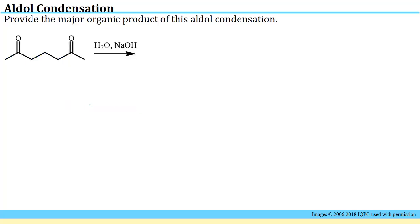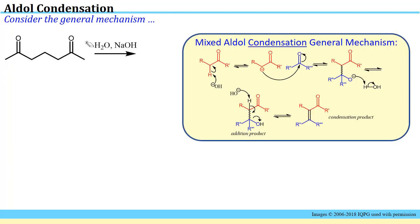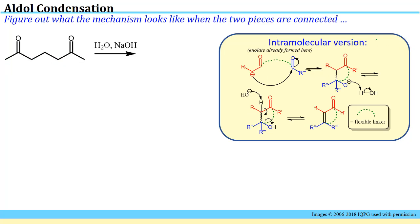Aldol condensation can also occur intramolecularly. Instead of two separate carbonyl species reacting to form one molecule, you can take two carbonyl functional groups attached by some type of linker and do an aldol condensation between the two. You still want to identify the alpha position that will act as a nucleophile. In this case, we have alpha carbons at several positions. I would color-code the nucleophilic piece in red, the piece that gets attacked in blue, with a dotted line representing the linker. In the product, you'll have some sort of cyclic structure with a double bond in it.